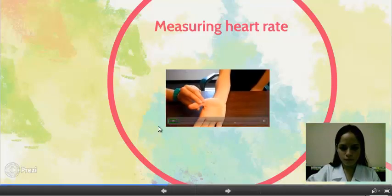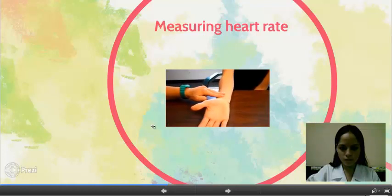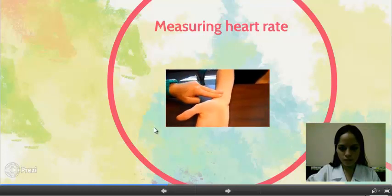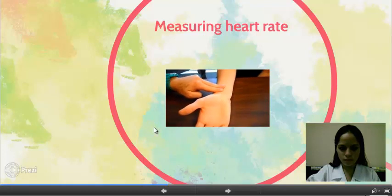On the radial side, find the radial artery and press in with your forefinger and middle finger until you can find the pulse.